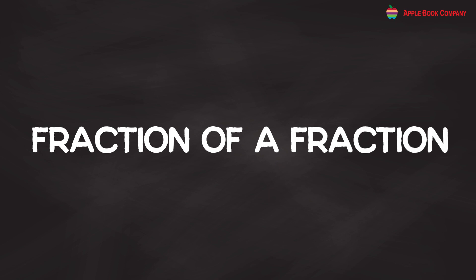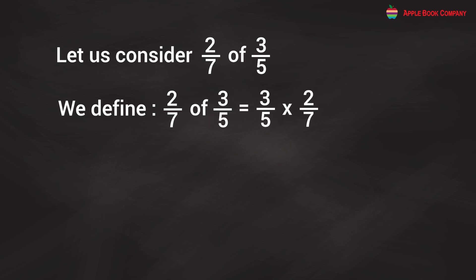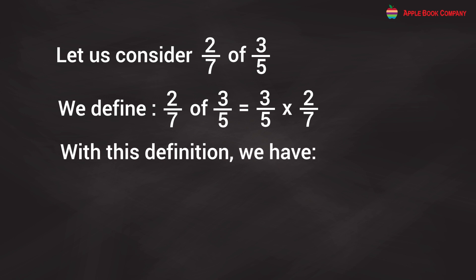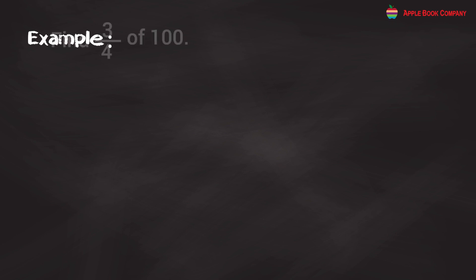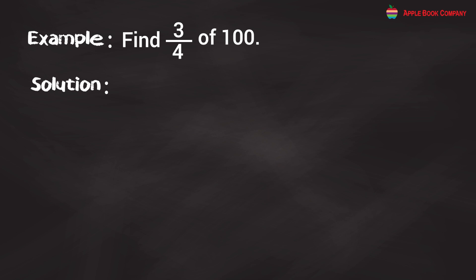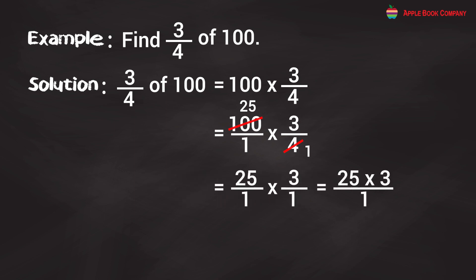Fraction of a Fraction. Let us consider 2/7 of 3/5. We define 2/7 of 3/5 = 3/5 × 2/7 = (3 × 2)/(5 × 7) = 6/35. Example: Find 3/4 of 100. Solution: 3/4 of 100 = 100 × 3/4. Simplifying, 100/4 = 25, so 25 × 3 = 75.